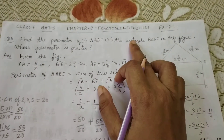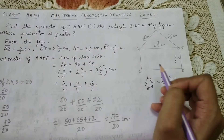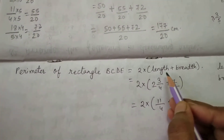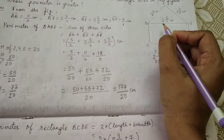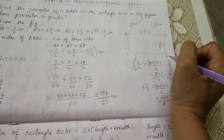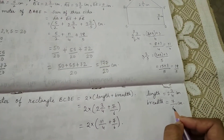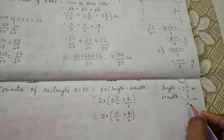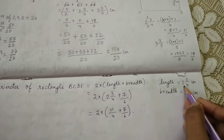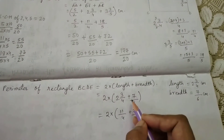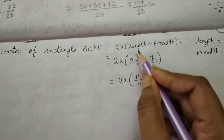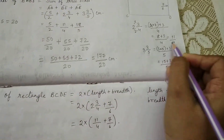Now we need to find the perimeter of rectangle BCDE. The formula from class 6 is: perimeter of rectangle = 2 × (length + breadth). The length BE = 2 and 3/4 cm and the breadth DE = 7/6 cm. Substituting into the formula: 2 × (2 and 3/4 + 7/6). Convert the mixed fraction 2 and 3/4 to improper fraction: 11/4.